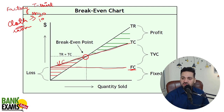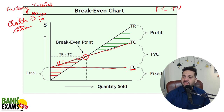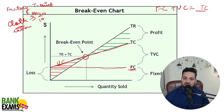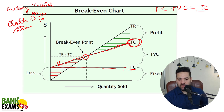If we add fixed cost with variable cost, we get total cost. That's how it is — fixed cost plus variable cost gives you total cost.